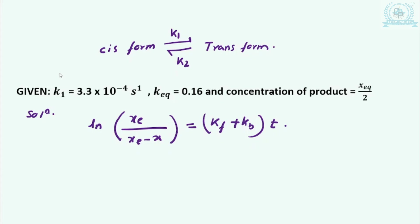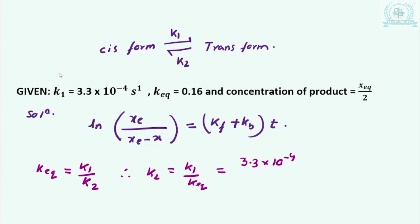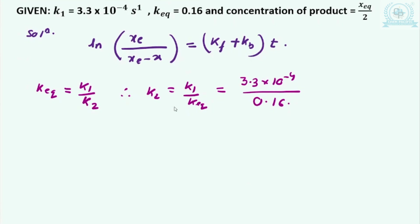They have given all the values. K_equilibrium equals the rate of the forward reaction k1 divided by k2, so k2 equals k1 divided by K_equilibrium. The value of k1 is 3.3 × 10⁻⁴ s⁻¹ and K_equilibrium is 0.16, giving k2 equal to 20.6 × 10⁻⁴ s⁻¹.